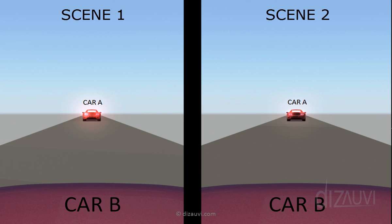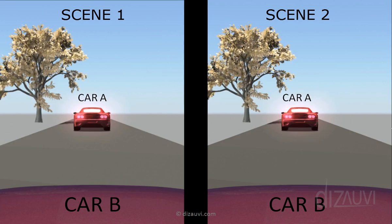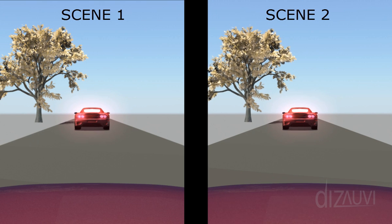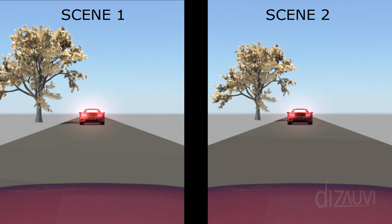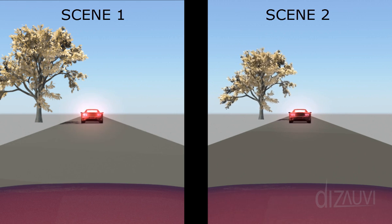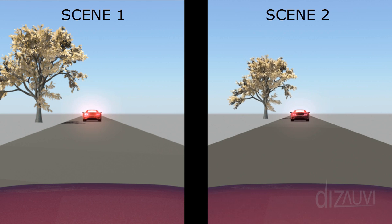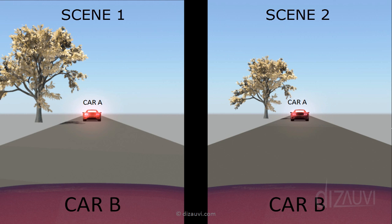The reason the observer cannot tell the difference is because the surroundings are identical, so there is no other clue available to the observer as to whether he or she is moving. Now let's make a little change in our scene so that there is a tree on the roadside. Now if we move the cars as we did previously, it's easier to tell which car is moving — all because of this tree in the scene.